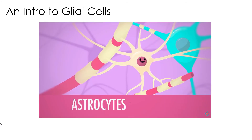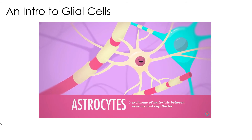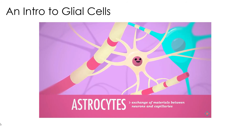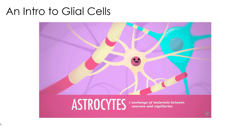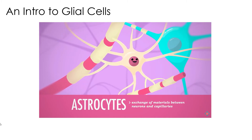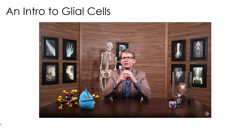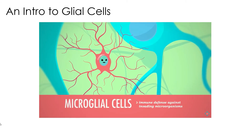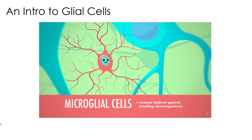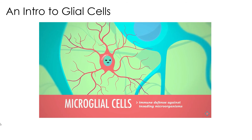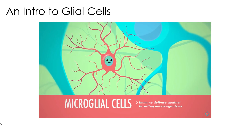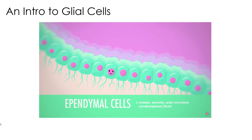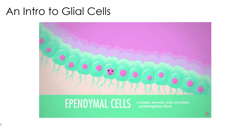Star-shaped astrocytes are found in your central nervous system and are the most abundant and versatile glial cells — they anchor neurons to their blood supply and govern the exchange of materials between neurons and capillaries. Also in the CNS are protective microglial cells, which are smaller and thorny-looking and act as the main source of immune defense against invading microorganisms in the brain and spinal cord. Ependymal cells line cavities in your brain and spinal cord and create, secrete, and circulate cerebrospinal fluid that fills those cavities and cushions those organs.